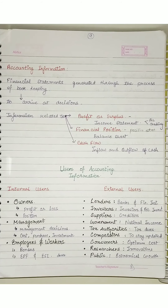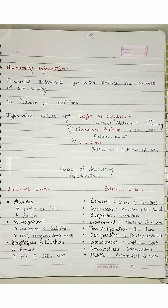Whether the company has income or not — will they get a bonus or not? Along with that, whether EPF and ESI dues are being paid or not — that is also very important for them. EPF is Employees Provident Fund, and ESI is Employees State Insurance — these are for employees, which the company pays. And this is shown in our balance sheet.